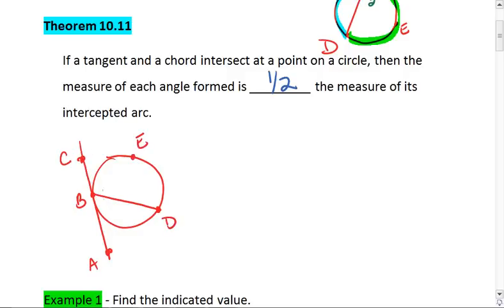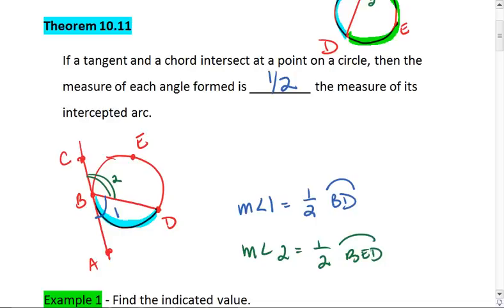Angle 1 is half of arc BD, which is the minor arc here, and angle 2 is half of arc BED, which is our major arc here.